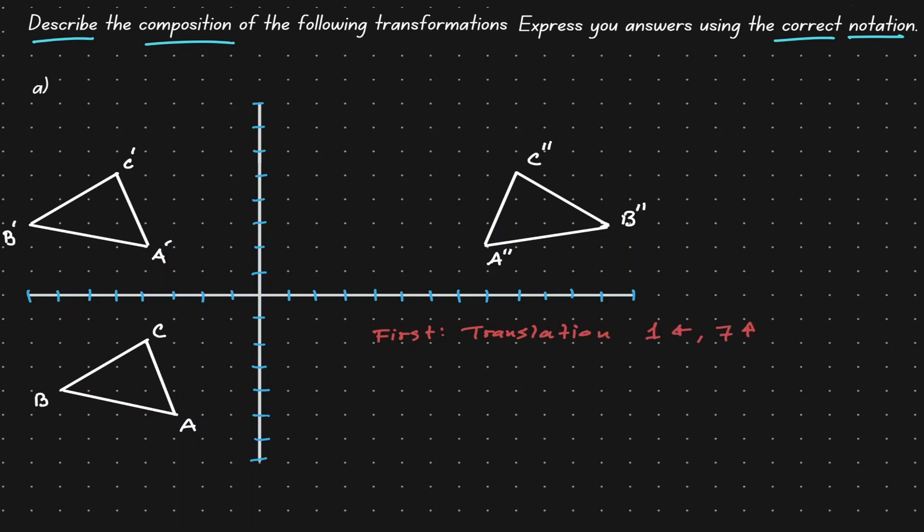To identify the second transformation, let's think of what was the movement that occurred in order for us to go from triangle A'B'C' to triangle A''B''C''. Well, let's check if that is another translation.